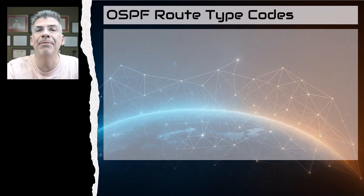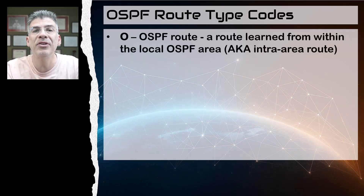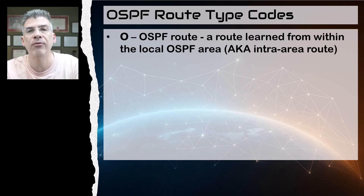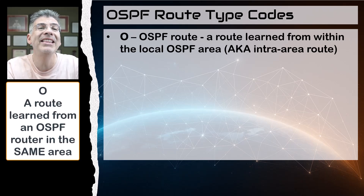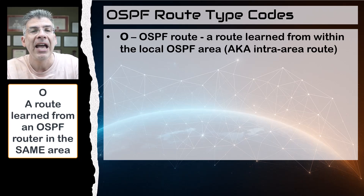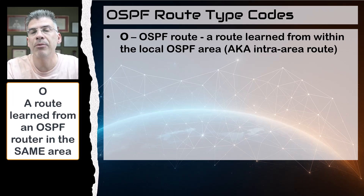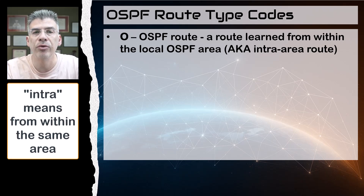The first route type is O, which represents a standard OSPF route. This refers to a route learned via OSPF from a source located within the same OSPF area as the router whose routing table we're examining. These routes are also called intra-area routes.